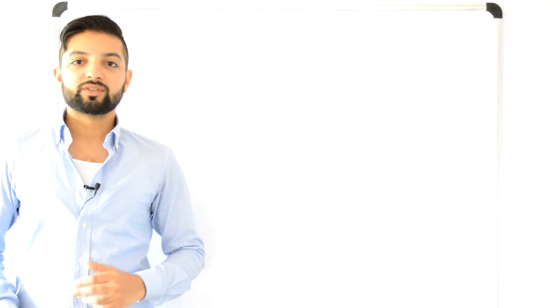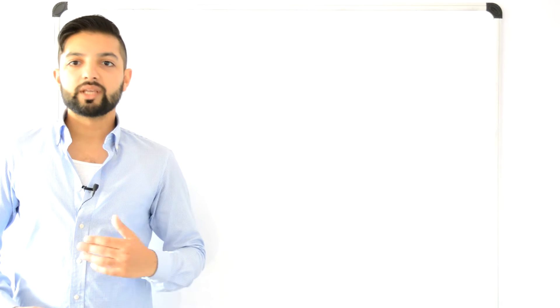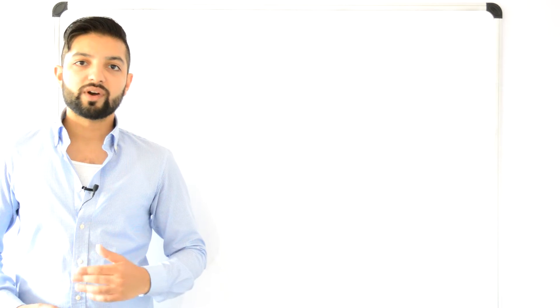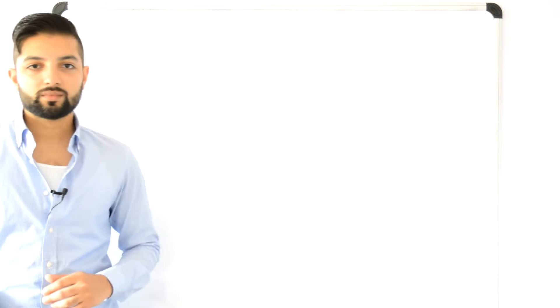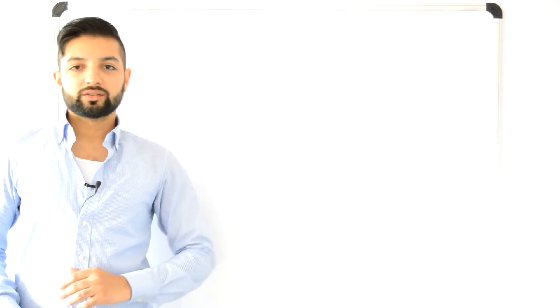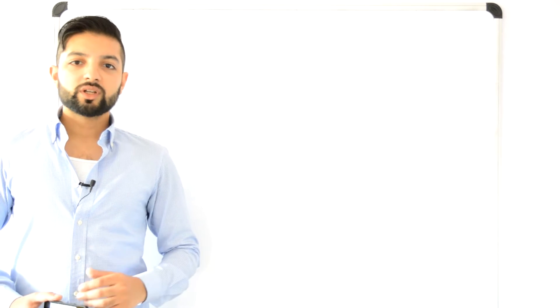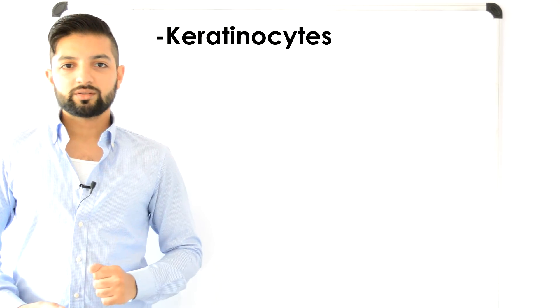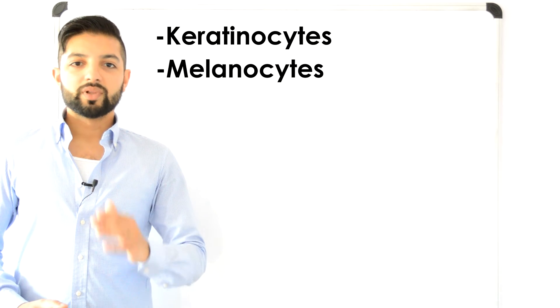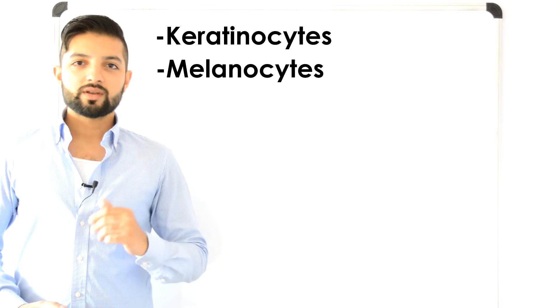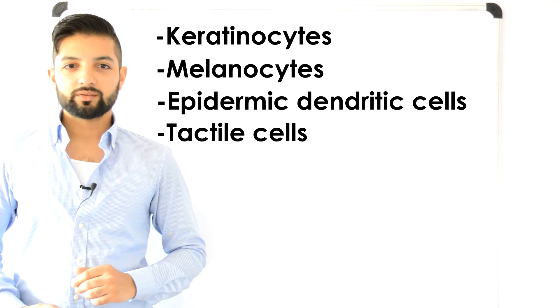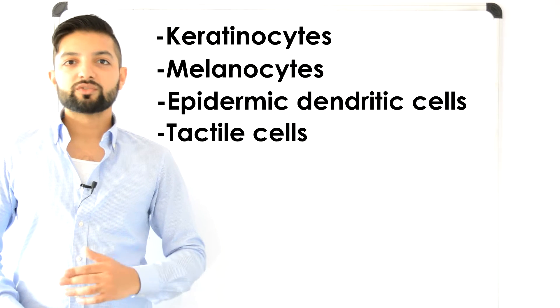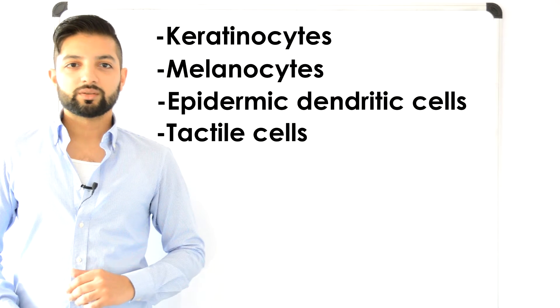Now there are four distinct types of cells which populate the epidermis, and it is separated into four or five distinct layers. Let's talk about the cells of the epidermis. The four cells of the epidermis are keratinocytes, melanocytes, epidermal dendritic cells, and tactile cells. Now let's go through each one of these four different types of cells.